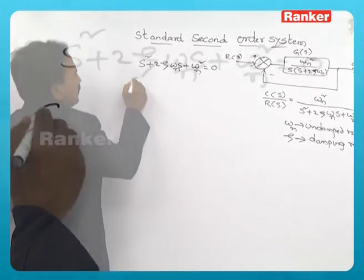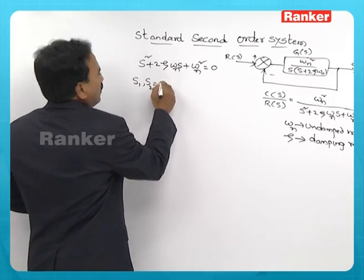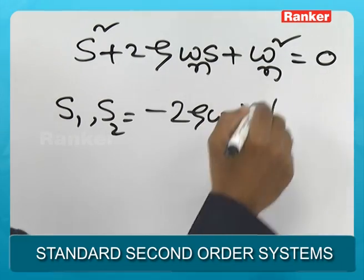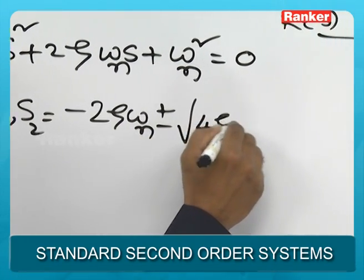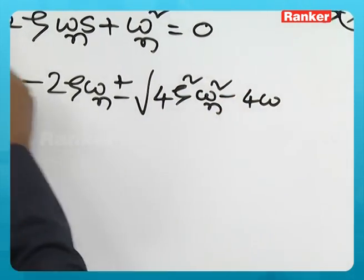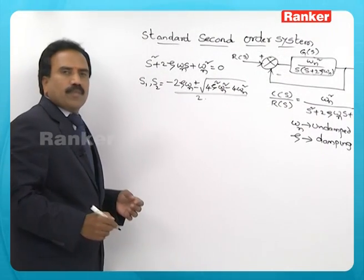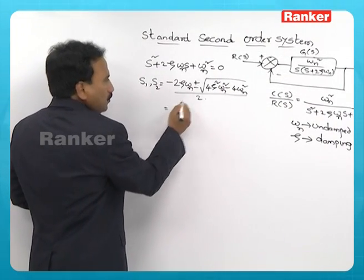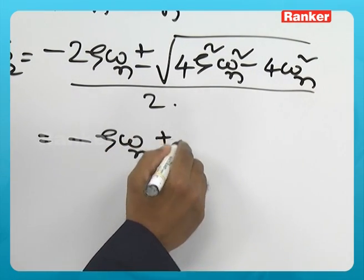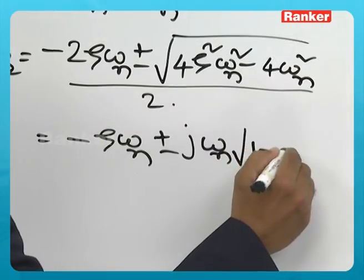The roots of this characteristic equation s1 and s2 is minus 2 zeta omega n plus or minus under root of 4 zeta square omega n square minus 4 omega n square by 2. If you simplify this: minus zeta omega n plus or minus j omega n root 1 minus zeta square.